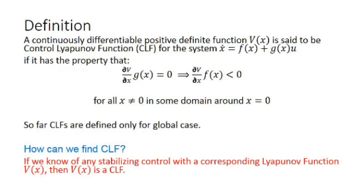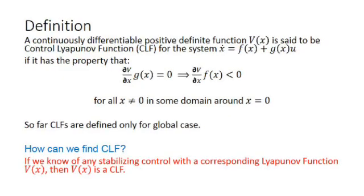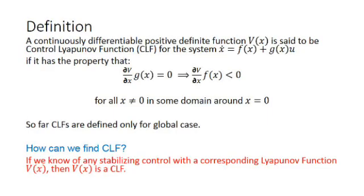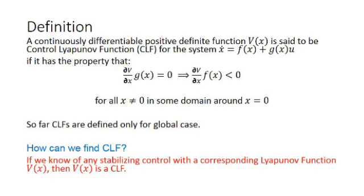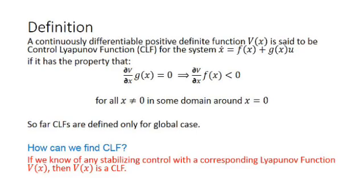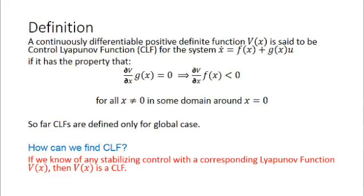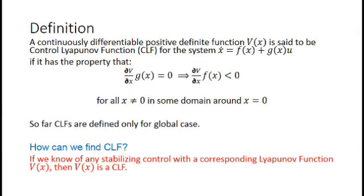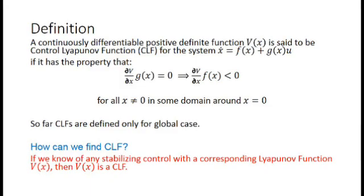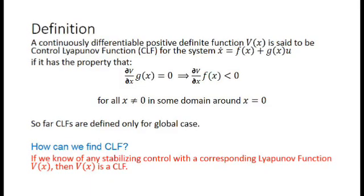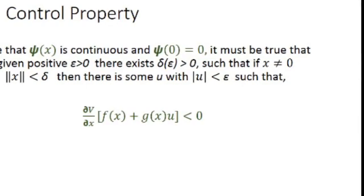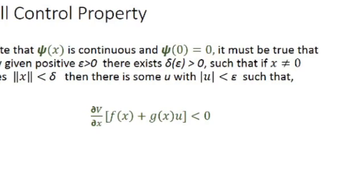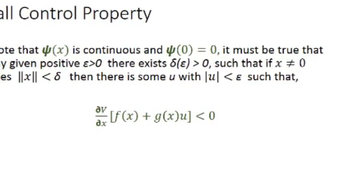The question arises: how do we find the control Lyapunov function? The answer is that if we know any stabilizing control for a given system with a corresponding Lyapunov function, then that Lyapunov function is actually the control Lyapunov function. So if you design a controller with an associated Lyapunov function that proves stability, that Lyapunov function can serve as the CLF — it must satisfy the above property.